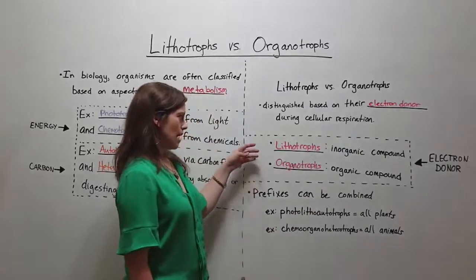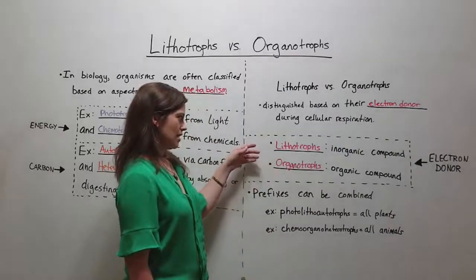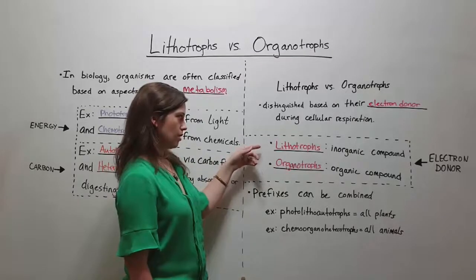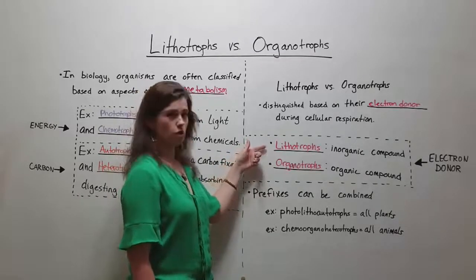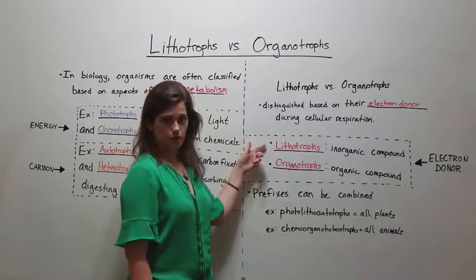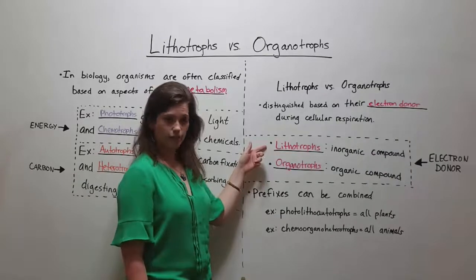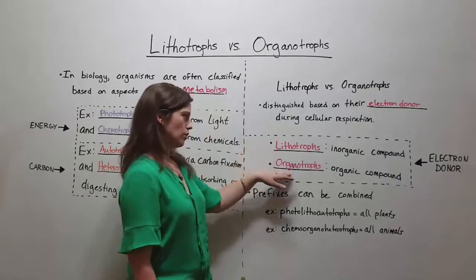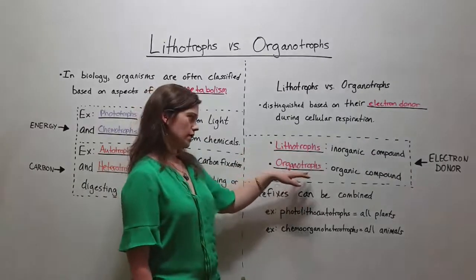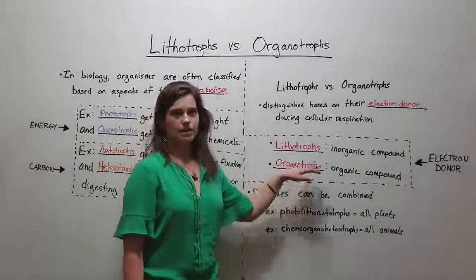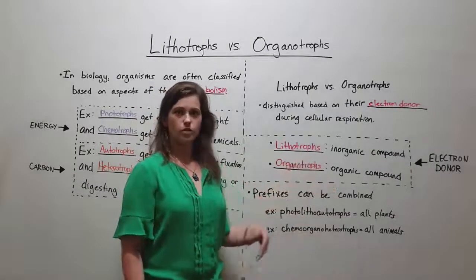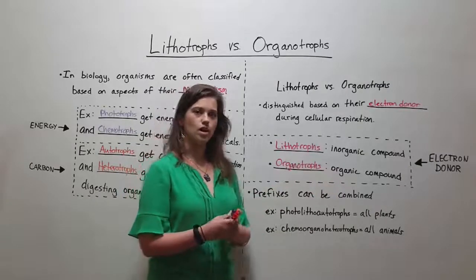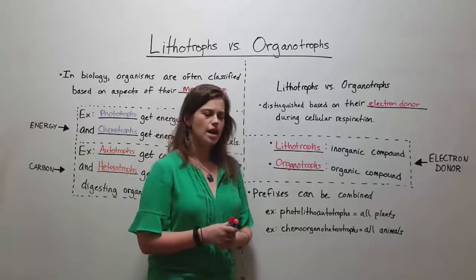Keep in mind that all lithotrophs are a type of bacterium, whereas organotrophs include many bacteria but also include plants, animals, and other organisms with which we are familiar.